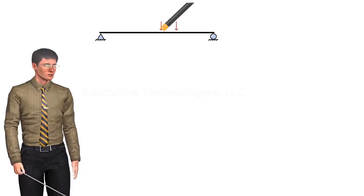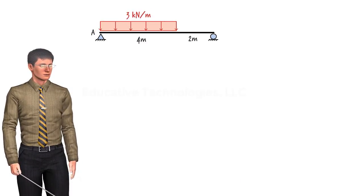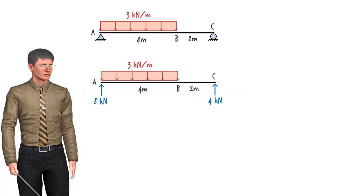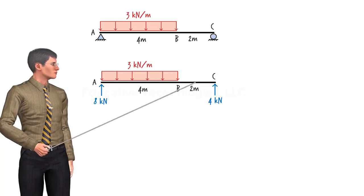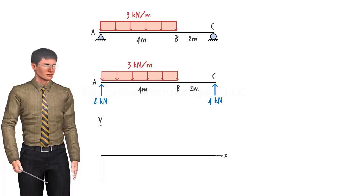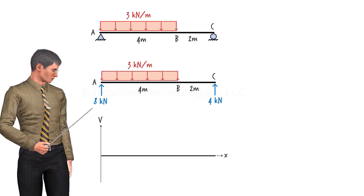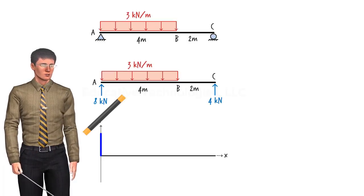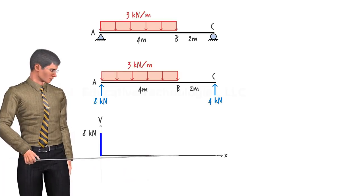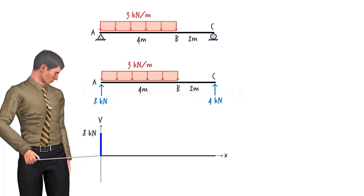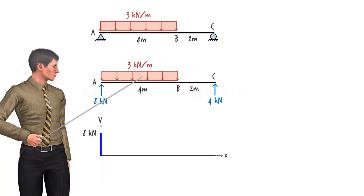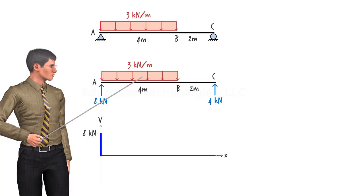Now let's look at a case in which the beam is subjected to a uniformly distributed load. We start by drawing the beam's free body diagram and calculate the unknown support reactions. Notice how the load divides the beam into two segments: the left segment is subjected to a uniformly distributed load, and the right segment is load-free. The upward force at A causes a positive shear force to develop at the left end of segment AB, with a magnitude of 8 kilonewtons. The change in shear between the segment ends equals the total area under the load diagram within the segment. The area associated with the distributed load is that of a rectangle — here it equals 3 times 4, or 12.